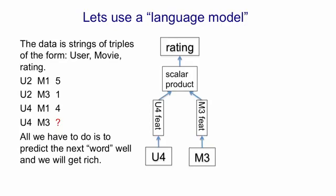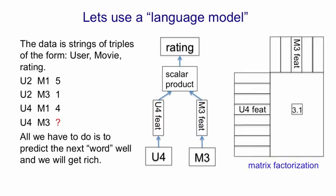It's not even a softmax — you output whatever real number you get from the scalar product. Now that's exactly equivalent to something normally called a matrix factorization model. If we arrange the user features down the rows and the movie features above the columns, we can see that multiplying the matrix of users-times-features by the matrix of features-times-movies gives us predictions for the ratings, exactly equivalent to the language model. The matrix factorization model is the most commonly used model for collaborative filtering like this, and it works pretty well.